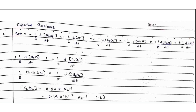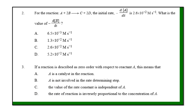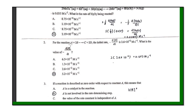The answer for question one is D. Question two: for the reaction A + 2B → C + 2D, the initial rate is given as −dA/dt = 2.6 × 10⁻³ M/s. The question asks for the value of d[B]/dt. One student directly showed the calculation as 2 × 2.6 × 10⁻³ and got the correct answer, but lost one or two marks for not showing the steps.